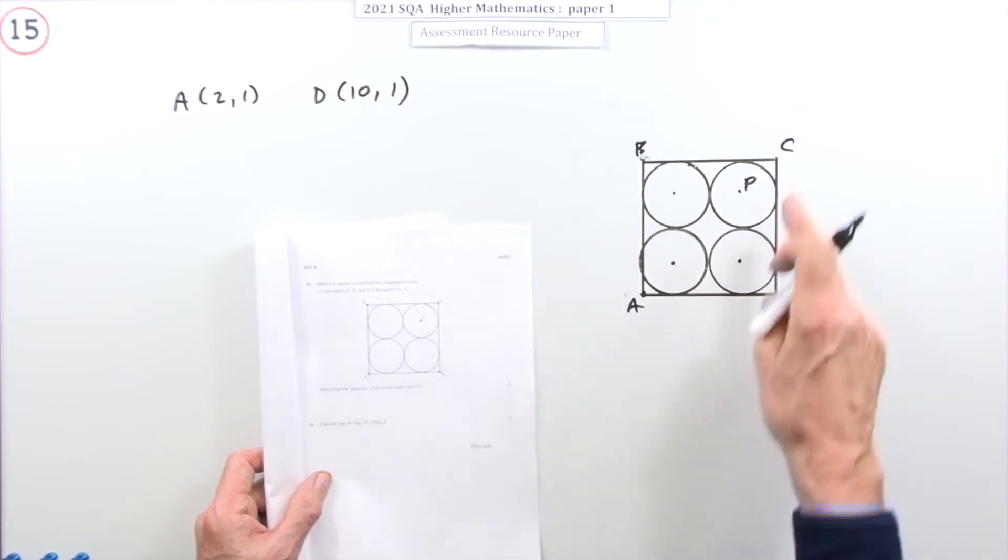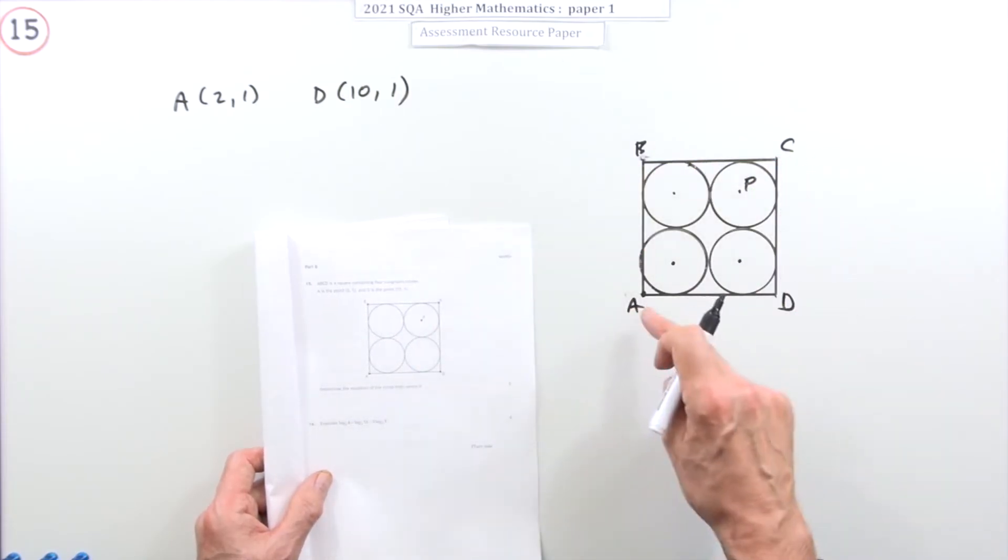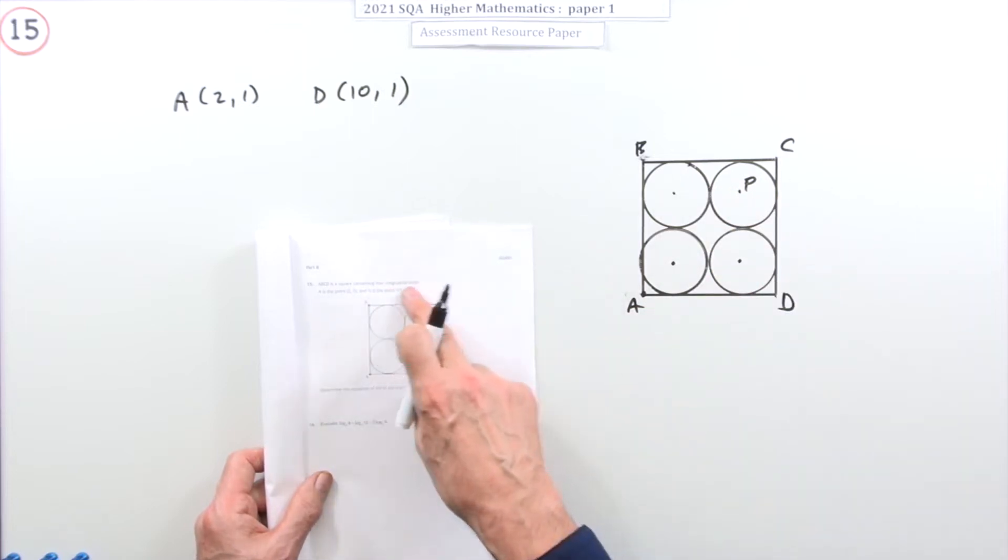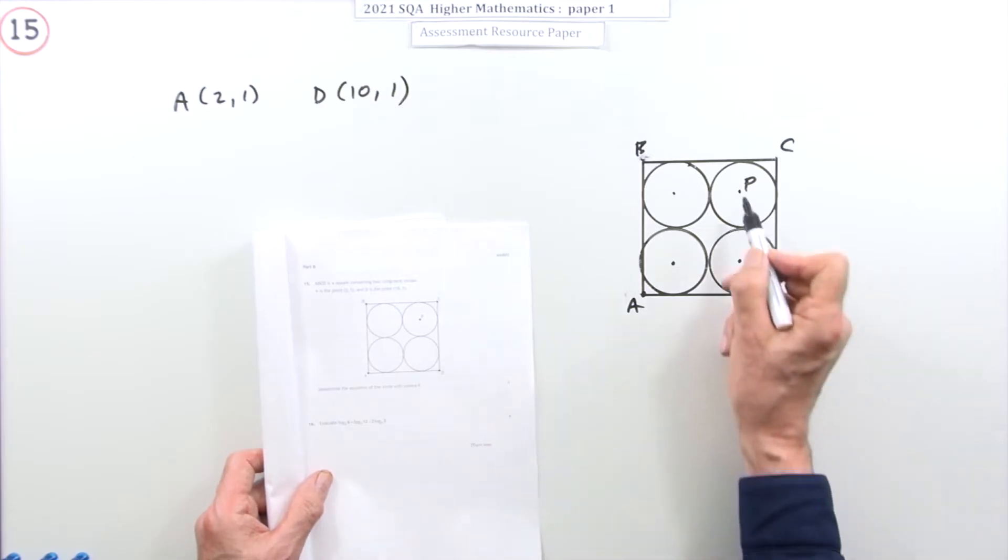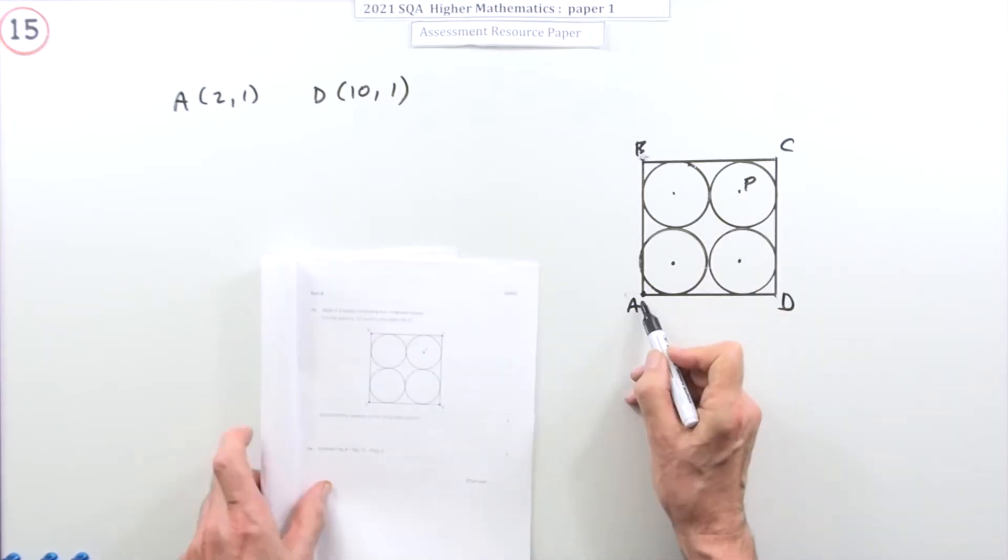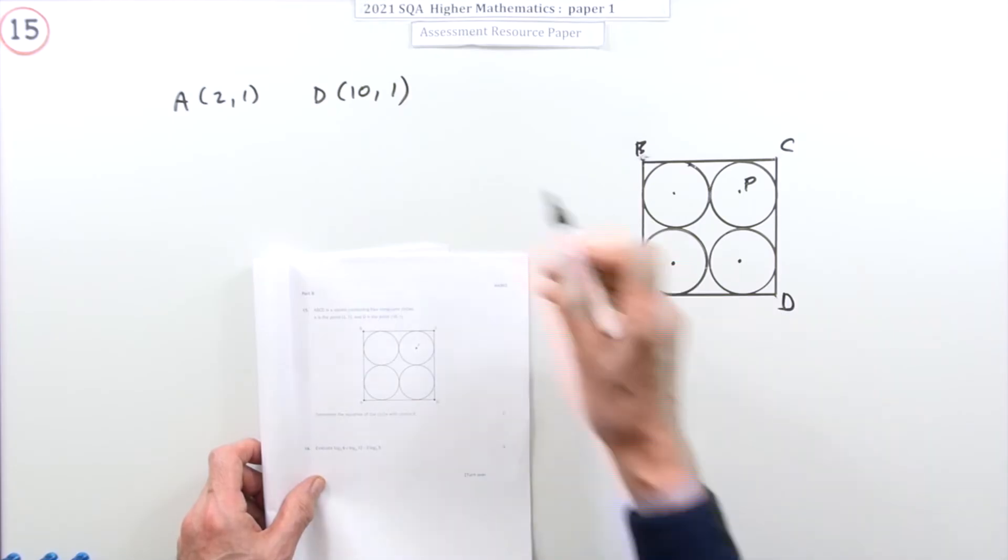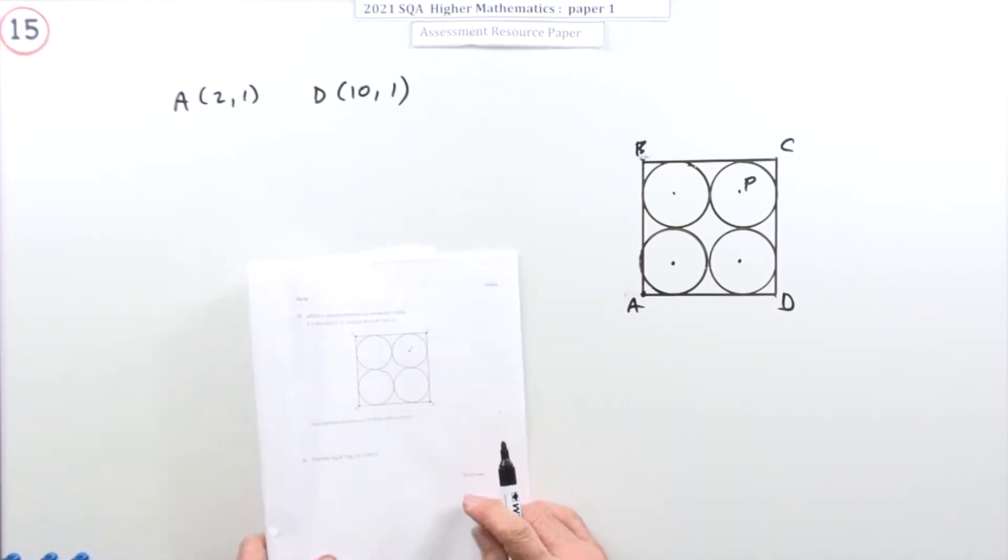What does it show you? You've got this diagram. There's a square with four congruent circles, identical circles in it. You have to determine the equation of the circle with center P, given that A is the point (2,1) and D is the point (10,1) for three marks.